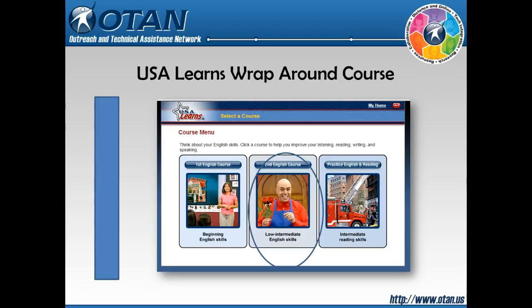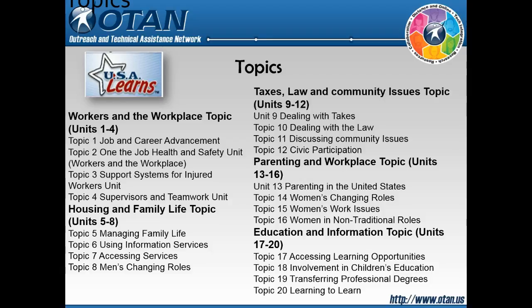USA Learns Wraparound Course is a course designed to go along with the free USA Learns series. This course is designed for the low intermediate level. There are five units with 20 topics. The units include workers and the workplace, housing and family life, taxes, law and community issues, parenting and workplace, and education and information.